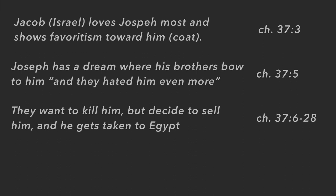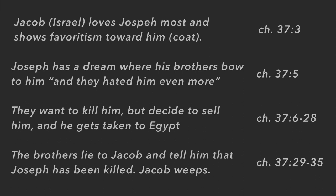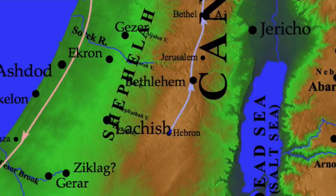The brothers want to kill him but realize they won't get anything for that, so they decide to sell him instead. They sell Joseph to Midianite traders and he gets shipped off to Egypt. They lie to Jacob about it — they put animal's blood on his coat and go back and tell him Joseph has been killed. Jacob thinks his precious son is dead and weeps.